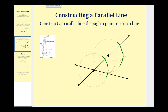Let's go ahead and mark where the arcs intersect the line that we drew. We'll put a point here and a point here. Now we're going to take the protractor, put the point of the protractor here on this red point, and then put the pencil of the protractor right here at the intersection of this green arc and the black line.